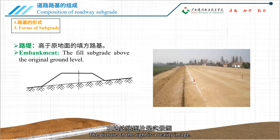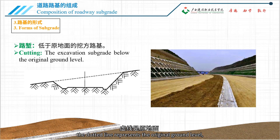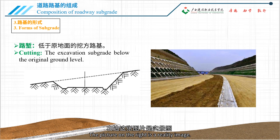The picture on the right is a reality image. On the left, this part is the newly constructed subgrade. The dotted line represents the original ground level, and the excavation below the original ground level is called a cutting. The picture on the right is a reality image.